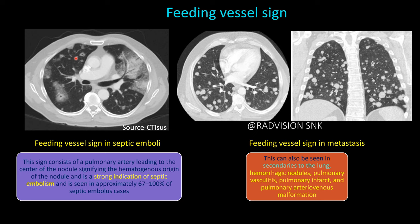Next case — feeding vessel sign: you can see small cavitating nodules with a feeding vessel entering into the cavitating nodule. These nodules are surrounded by ground-glass opacities and there is consolidation with air bronchograms. The feeding vessel sign is classically seen in septic emboli in 67 to 100 percent of cases. However, feeding vessel sign can also be seen in metastasis, granular mass, hemorrhagic nodules, vasculitis, infarcts, and pulmonary AV malformations. This particular case was a case of metastasis.